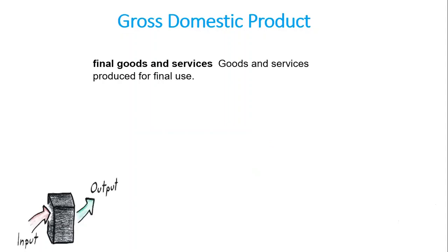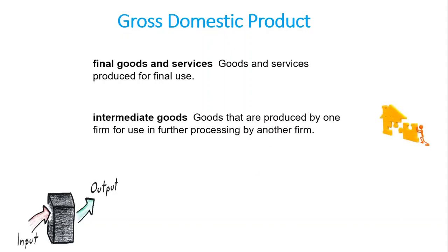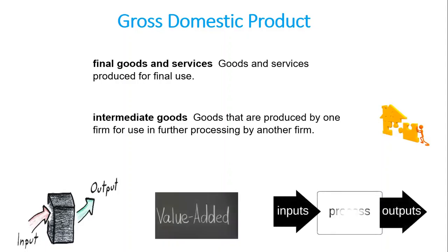Now, to illustrate the difference between final goods and intermediate goods: final goods and services are goods and services produced for final use, while intermediate goods are goods produced by one firm for use in further processing by another firm. The concept of value added is the difference between the value of goods as they leave a stage of production and the cost of the goods as they enter that stage. For example, if I have a restaurant and I purchase tomatoes and cucumbers for one dollar, then sell the salad for three dollars, the value added is three minus one, which is two dollars.